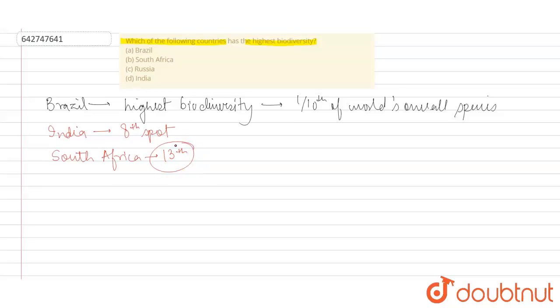And when we talk about Russia, Russia basically has low biodiversity because of its climate and other conditions which sustain that particular area and the availability of resources.